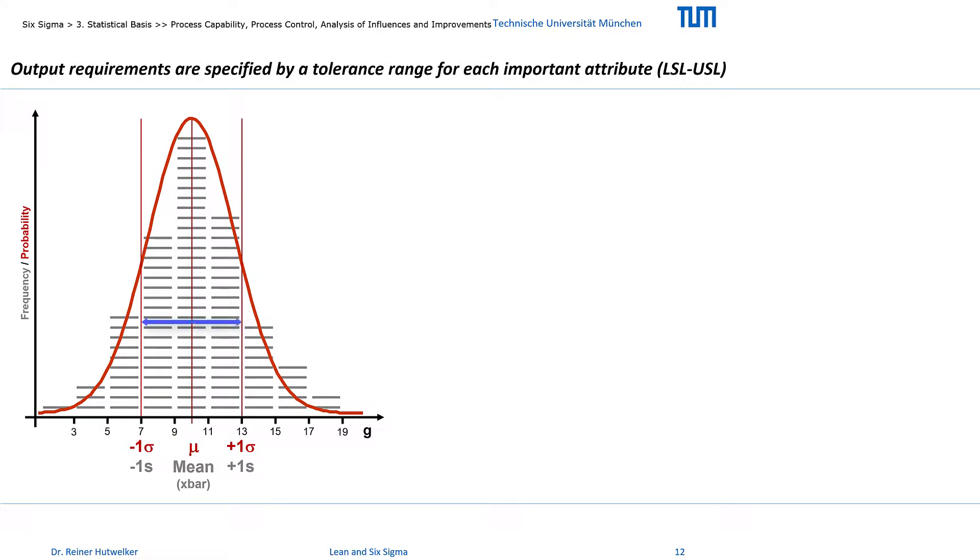You probably know that the area of the distribution between minus 1 to plus 1 standard deviation around the mean covers about 68% of the cookies. Accidentally in our example the lower specification limit falls at minus 1 and the upper specification limit at plus 1 standard deviations. Thus our actual process has a capability of 1 sigma which is equivalent to a yield of about 68%.